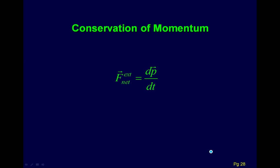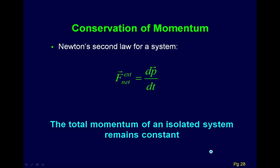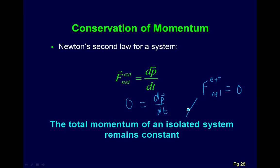This changes things for a system. Newton's second law for a system implies that the total momentum of an isolated system remains constant. By isolated, we mean the net external force sums to zero. When that equals zero, dP/dt equals zero and momentum can't change. It can be transferred between objects, but the total momentum of the system can't change. This is a really powerful idea.